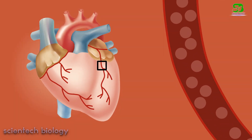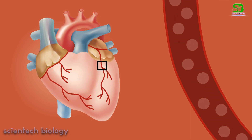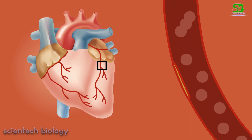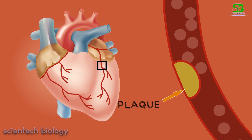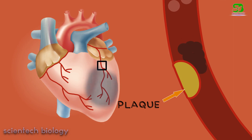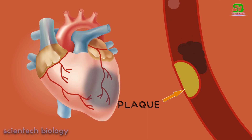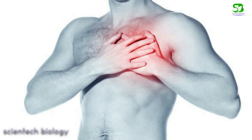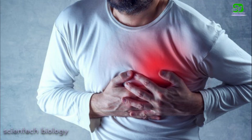In coronary heart disease, a plaque forms and accumulates in the coronary artery. Due to plaque deposition in the artery, the particular part of the heart does not receive enough oxygen or blood. This leads to chest pain or even stroke or a heart attack.